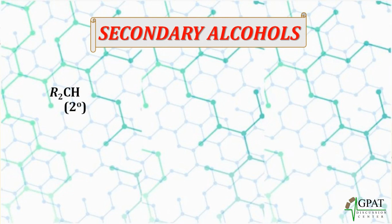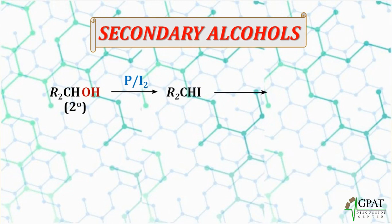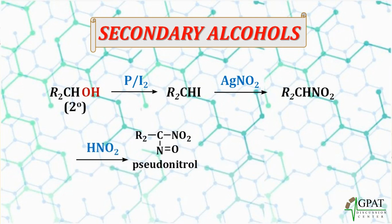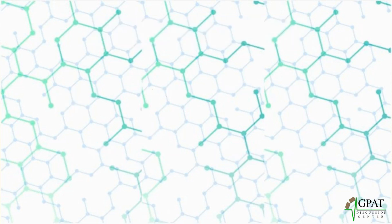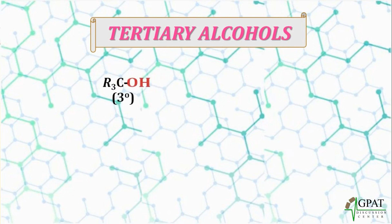For secondary alcohols (R₂CHOH): reaction with phosphorus and iodine forms the alkyl iodide. The alkyl iodide reacts with silver nitrite to form the nitroalkane. This nitroalkane reacts with HNO₂ to form pseudonitrol. Pseudonitrol reacts with caustic soda (NaOH) giving a blue color. So for secondary alcohols, blue color is observed.